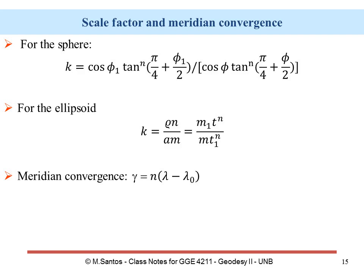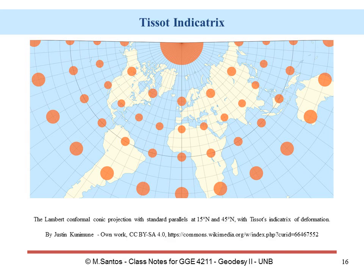To finalize, let's look at linear distortions as represented by the Tissot Indicatrix. We can clearly see the two standard parallels — one is a little bit north of New Brunswick in Labrador, and the other is close to the equator. Between them there is a region of decreased scale where the circles are slightly smaller, and as we move outside the standard parallels the linear distortion increases quite dramatically.